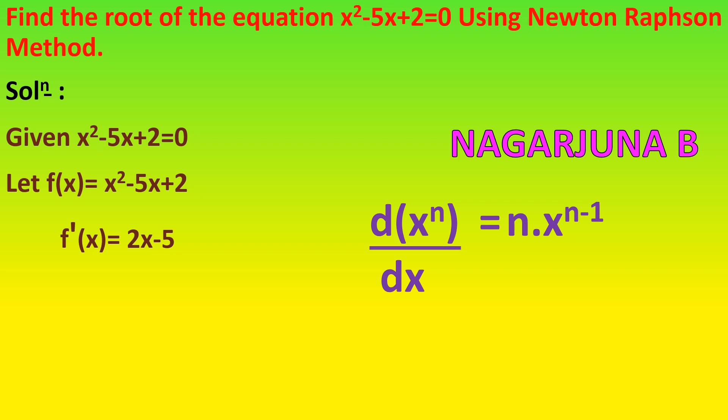How do we get 2x minus 5? The first term is x squared, so differentiating: 2 into x to the power 2 minus 1 gives 2x. For the second term, minus 5x: 5 is a constant taken outside, and differentiating x to the power 1 gives 1 into x to the power 0, which is 1, so we get minus 5. The constant plus 2 differentiates to 0. Therefore, f dash of x equals 2x minus 5.